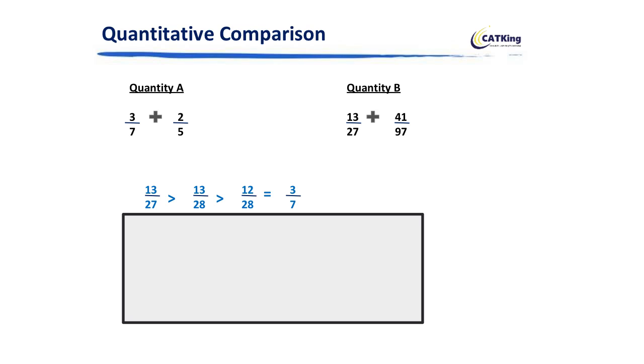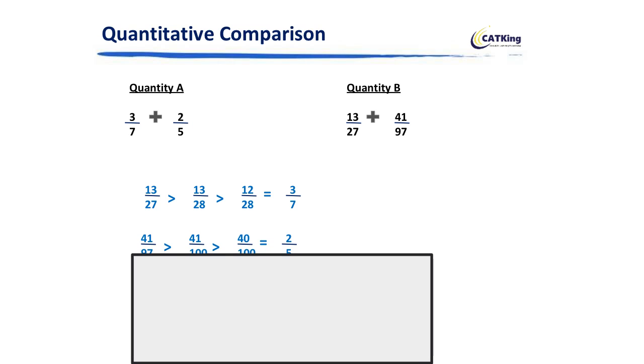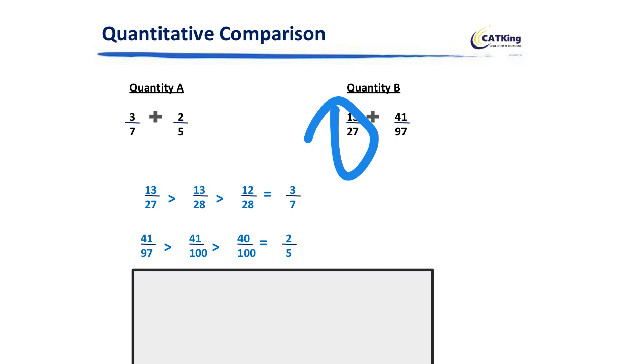Same fashion I will do with the second element which is 41/97. 97 we take it ahead to 100, and 41 we reduce it to 40, that makes it 40/100 which is nothing but 2/5, correct? So what I have got is that both the elements, 13/27 is greater than 3/7, 41/97 is greater than 2/5. That means my final answer is going to be B is greater than A.